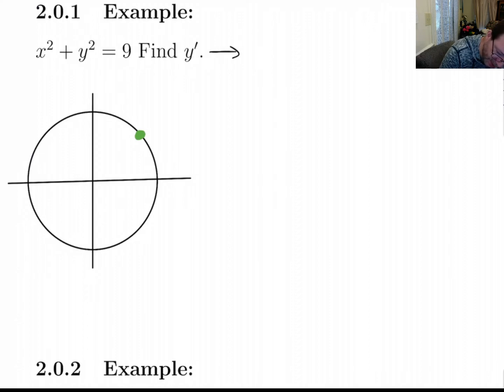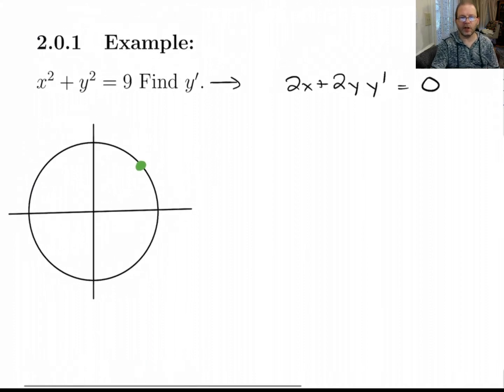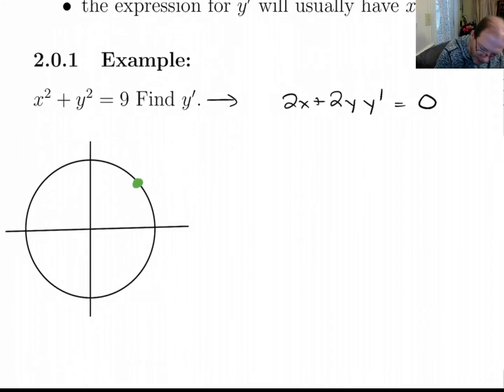All right, so what I would do here is I would say the derivative of x² is 2x. The derivative of y² is 2y y', and the derivative of 9 is 0. So we've got the chain rule happening there to give us that y'. Now, I can solve this out for y' by moving the 2x over. So I get 2y y' equals negative 2x. Divide both sides by 2y, I get y' is minus 2x over 2y, which is minus x over y.